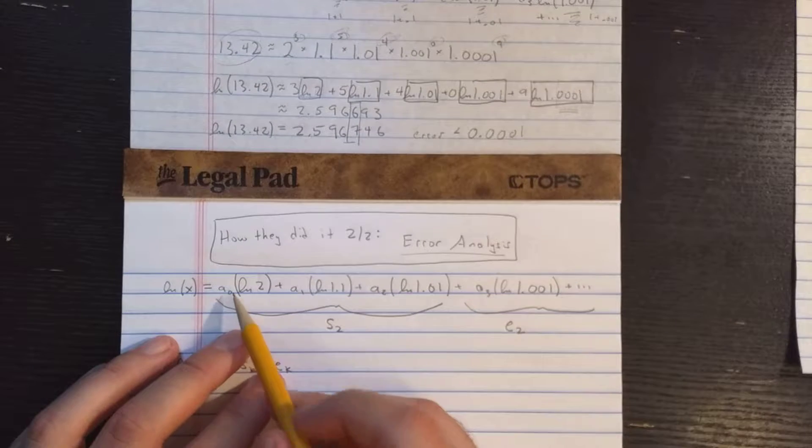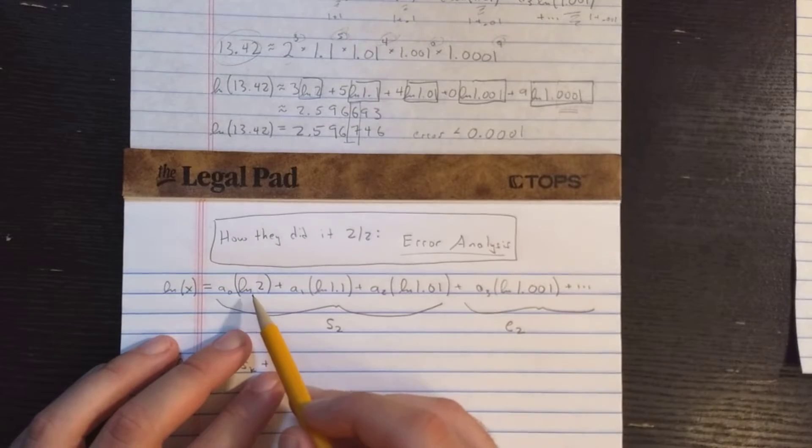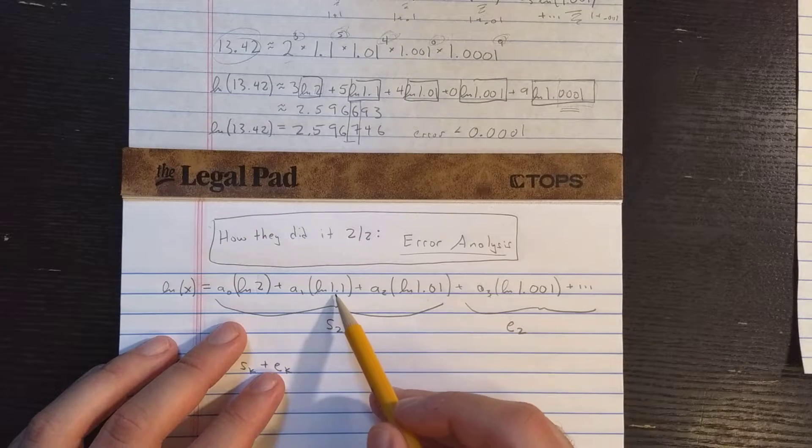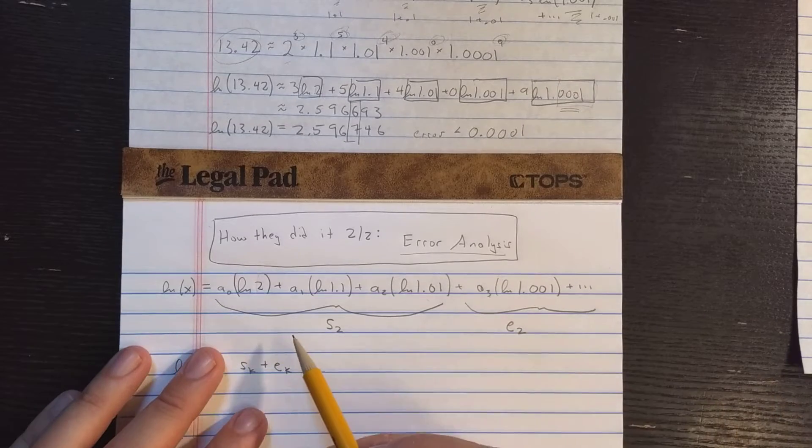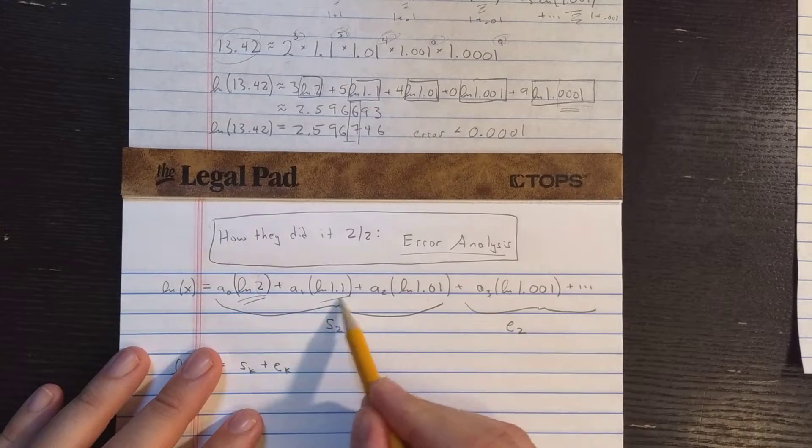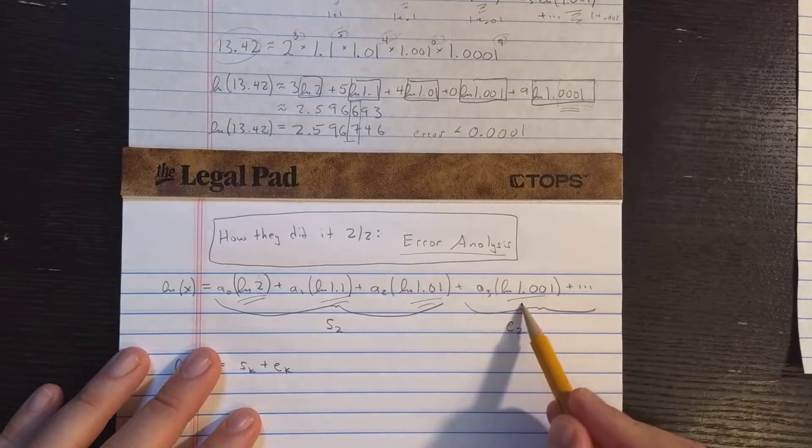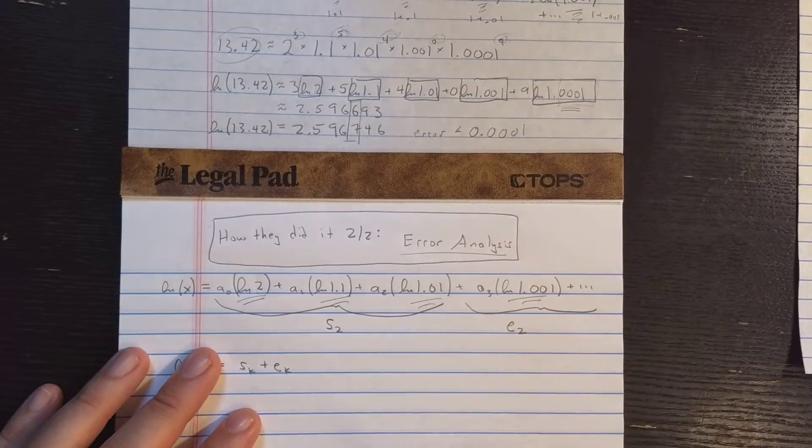Okay, anyway. So in general, we have something like this. We have constant times ln2, constant times ln1.1, constant times ln1.01, and so on. These constants, as we said, are in the hardware, and these coefficients are determined.